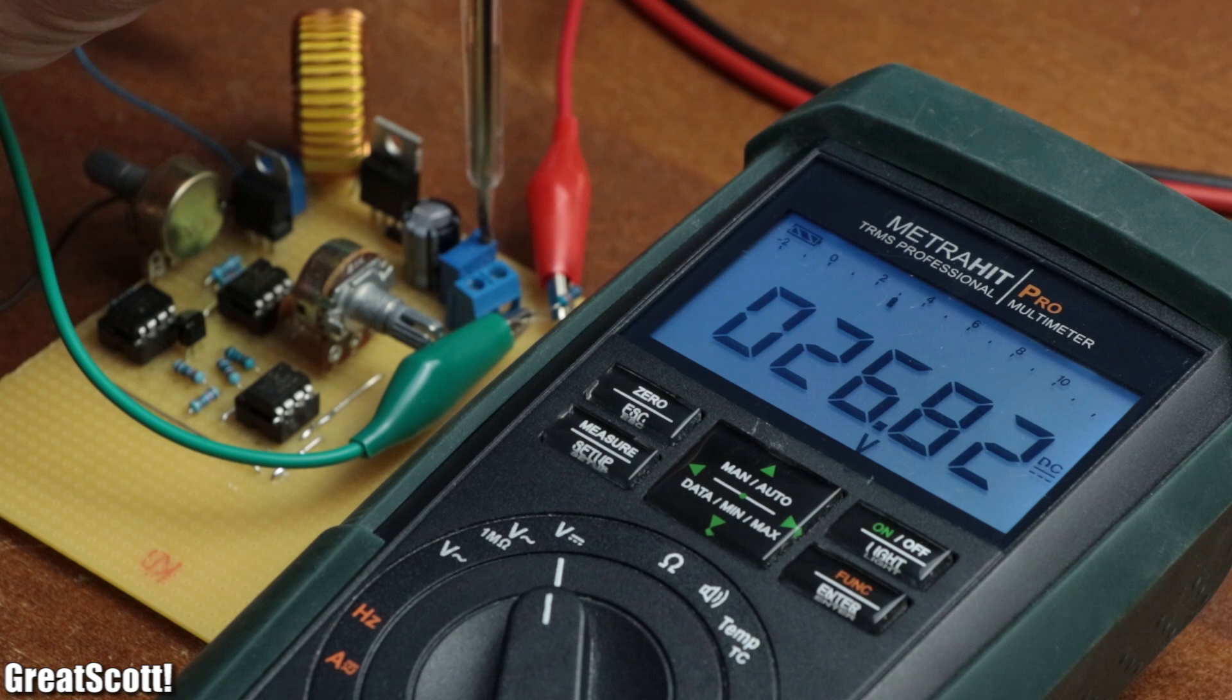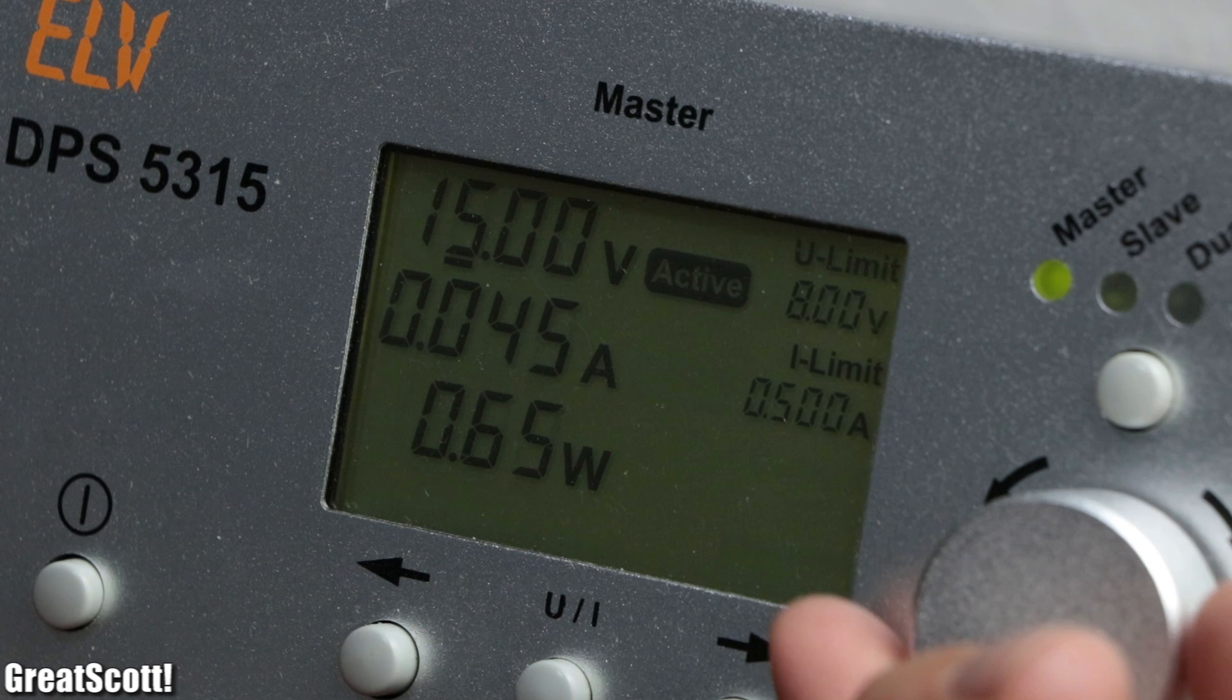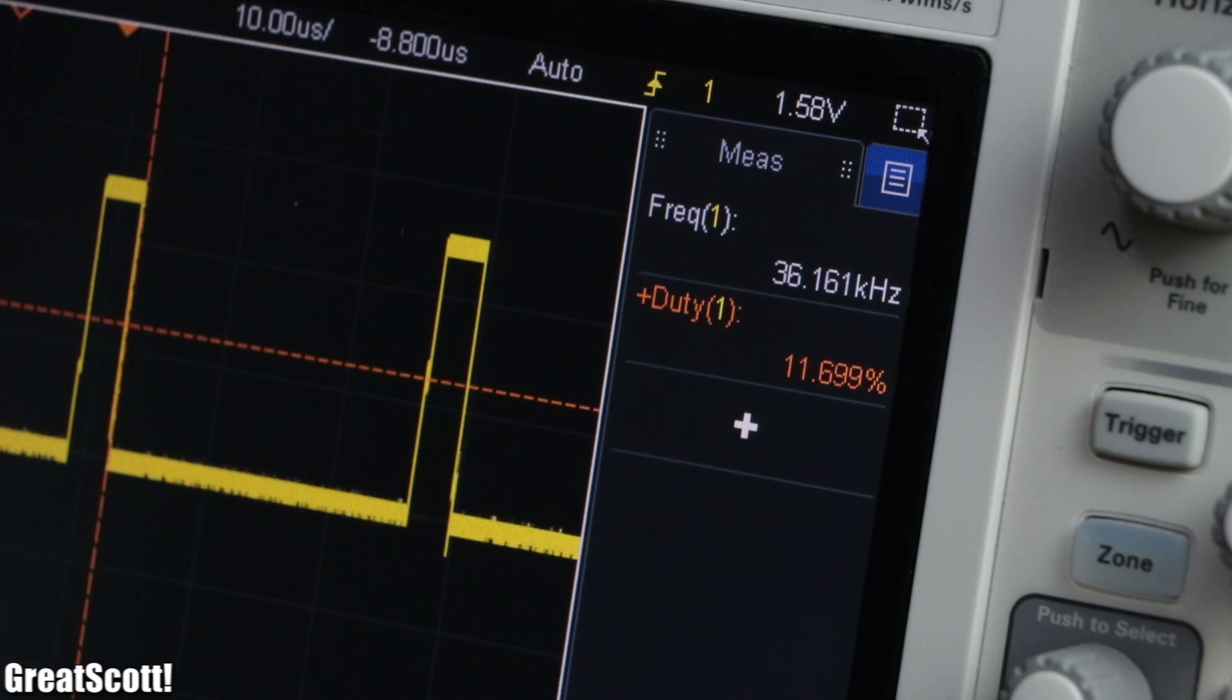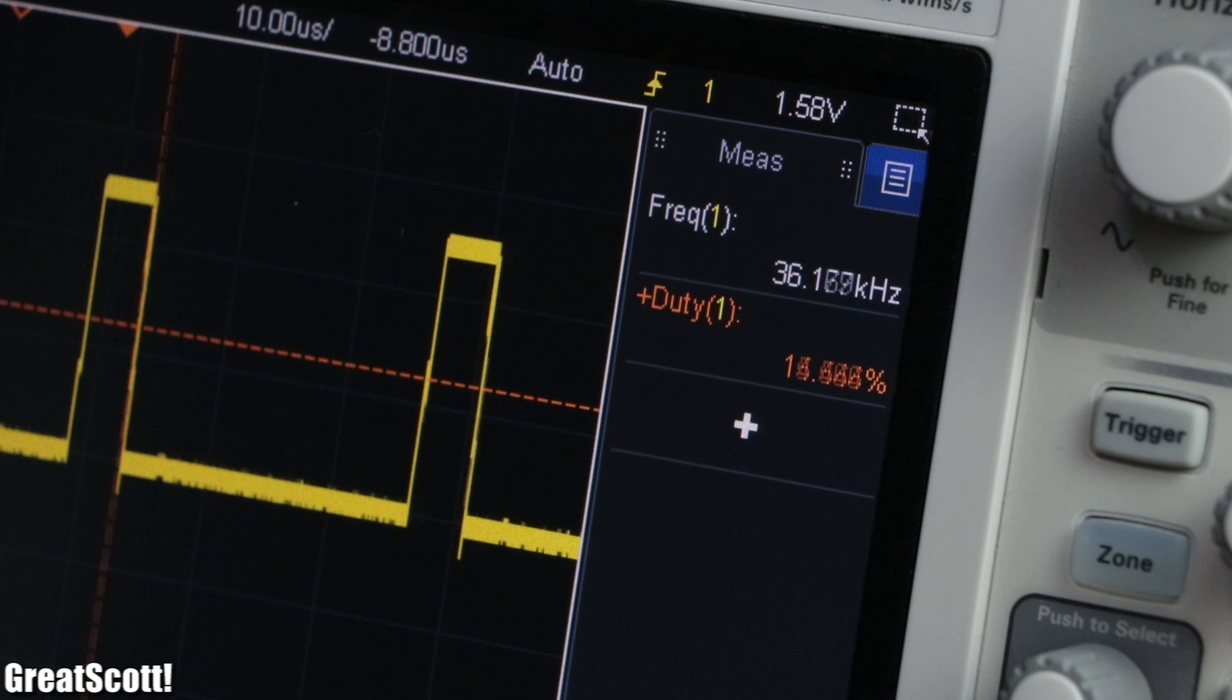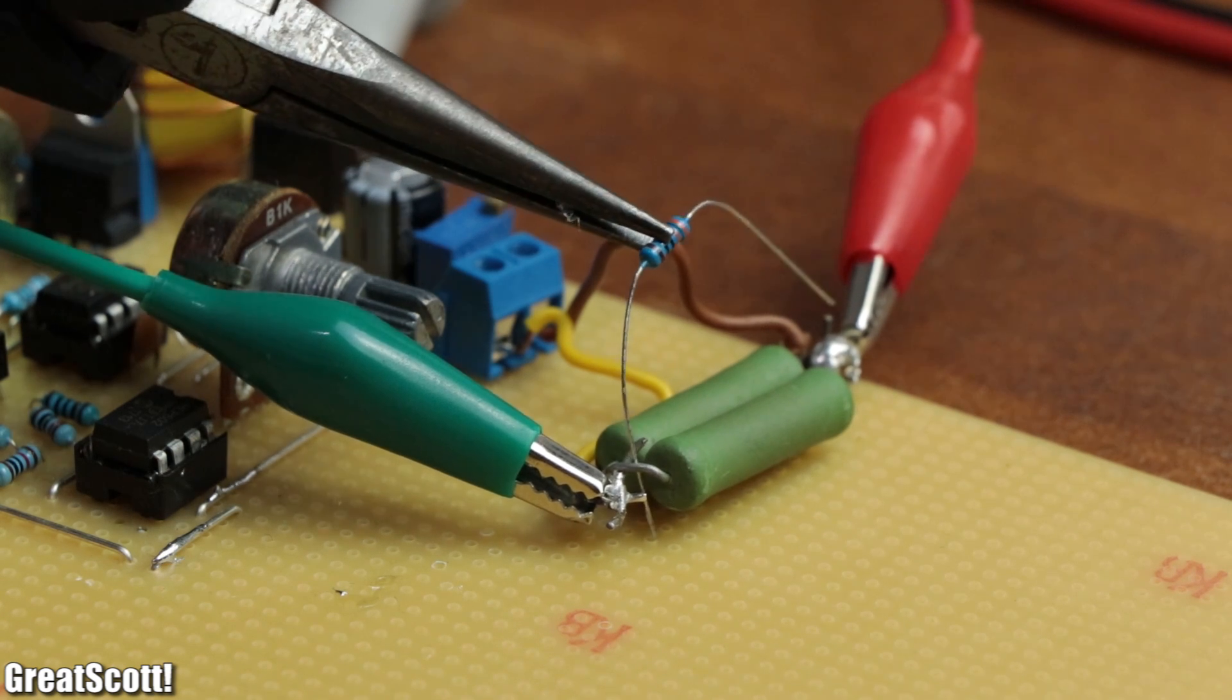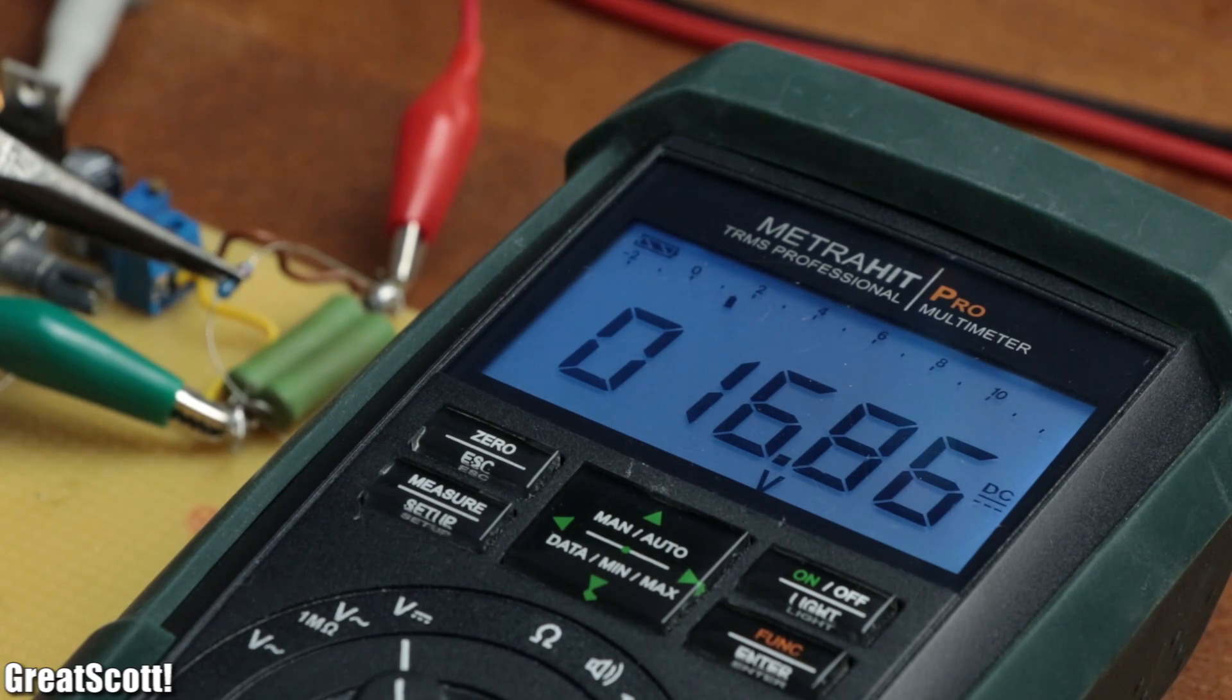As you can see, adjusting the output voltage is possible with the output trimmer. And by increasing or decreasing the input voltage, the duty cycle of the MOSFET got decreased or increased, which means the output voltage stayed almost constant. And as expected, by changing the output load, the voltage can also decently sustain its constant level.